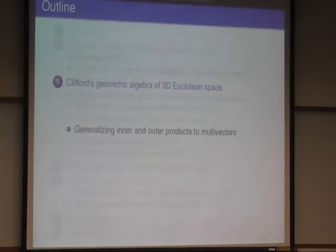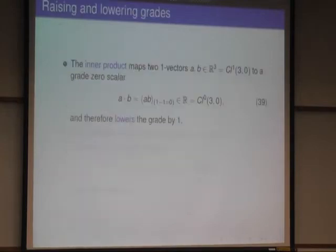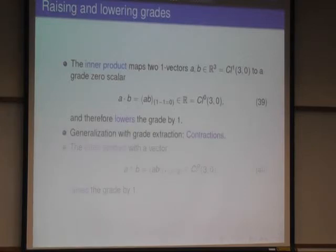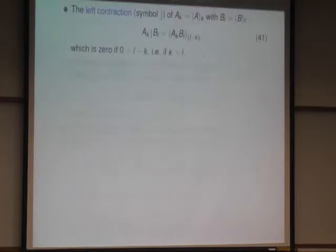Now I'll talk about how to generalize the inner and outer product, because we only have that for vectors so far. And let us make an observation. The inner product gives us a scalar, so it goes down from two vectors to grade zero scalar. It lowers the grade, and the generalization will be contraction. The outer product raises the grade. I go from grade one, two grade one vectors, to a grade two bivector.